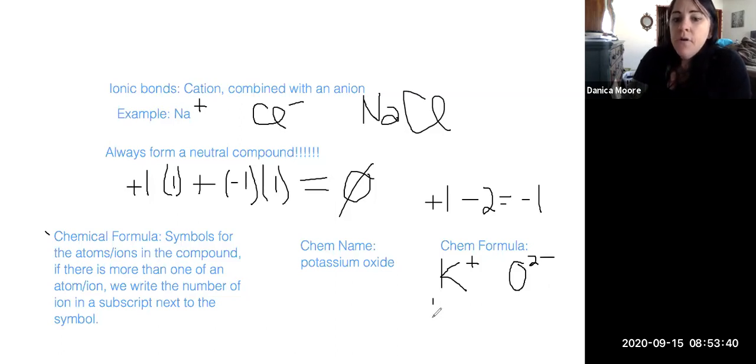So I have K for my chemical formula. I write a little two down here indicating that I need two of them. And then my O. And again, if we don't have more than one, we don't write in this subscript. It's just implied. But if while you're starting out, you're more comfortable putting a one there, that's totally fine. Whatever is more comfortable for you guys.